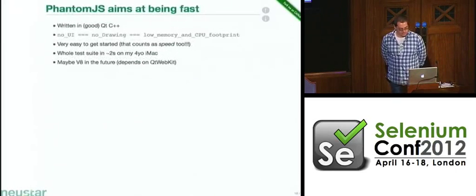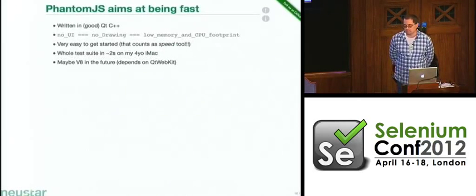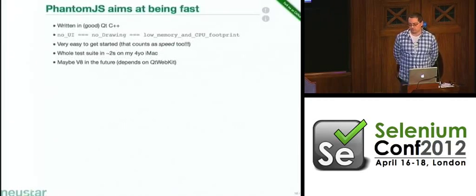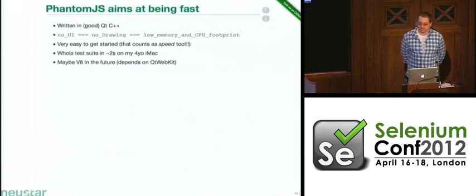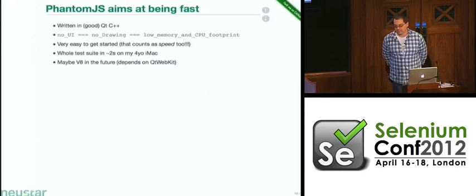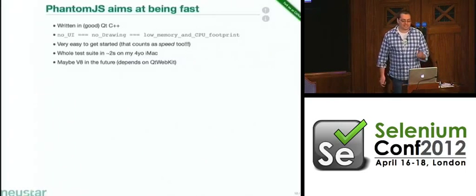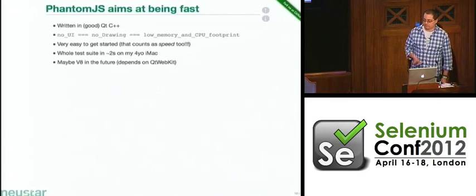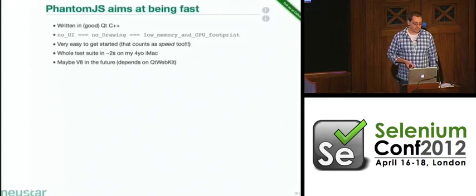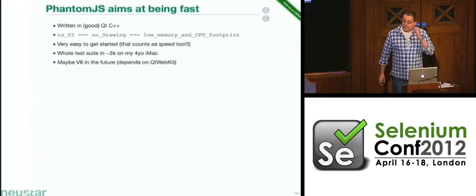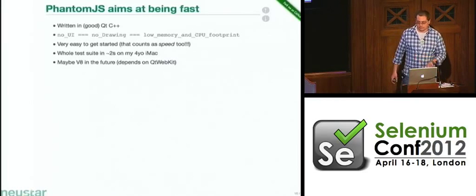We aim at making it as fast as possible and try to write fairly good Qt C++, but the most important aspect — what really makes it fast — is the fact that we are not drawing anything. The browser goes through all the steps of rendering a real web page, but we skip the moment where we take the layout tree and transform it into a bitmap on the screen, and that saves a lot of time. It's also extremely easy to get started: you just download the binary and submit the script and you're ready to go.